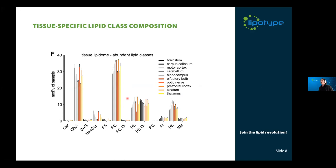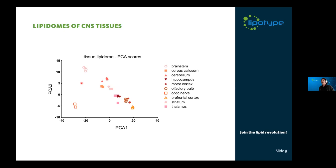We also published a paper on the lipidomes of different neuronal cell types and brain regions, in which we looked at several different brain regions dissected by our partners. At the lipid class level, each of the different tissues — brainstem, cerebellum, optical nerve — shows a very specific lipid class profile. When we do a clustering, we can nicely see that each of the different brain regions gives a distinct cluster, meaning each has a very distinct lipid composition.